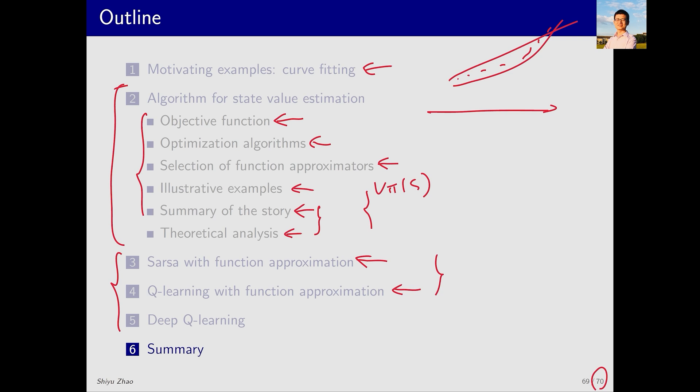Why? Because the earlier section had already laid a solid foundation. One point I forgot to mention is that in those sections we were estimating state value, whereas these algorithms estimate action value or optimal action value. This is a difference. Finally, we spent a significant amount of time introducing deep Q-learning. We not only presented the algorithm but also explained the key techniques involved—why they're useful, why they're necessary, and so on. We also provided examples to illustrate. That's it for this lecture. I hope you now have a good understanding of value function methods. That's all for today, see you next time.